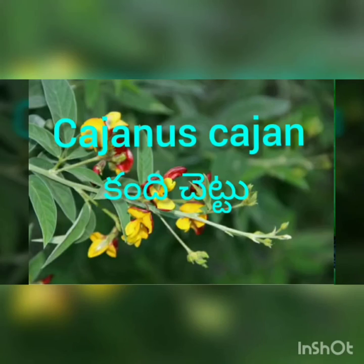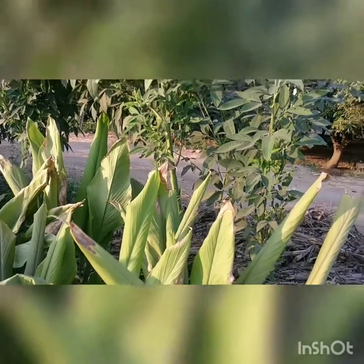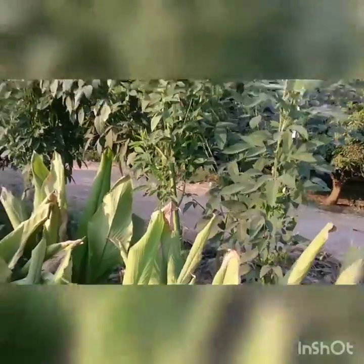Hi friends, welcome to Rishwas Biological Academy. Today we are going to see the morphological characters of red gram plant. The scientific name of this plant is Cajanus cajan.